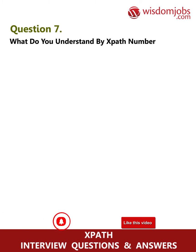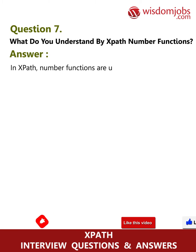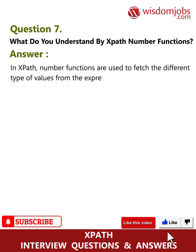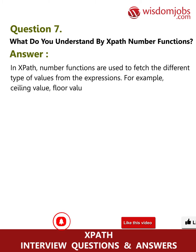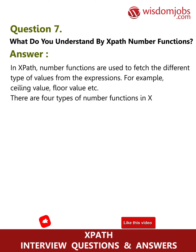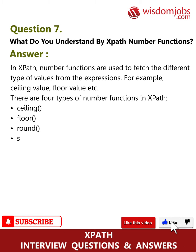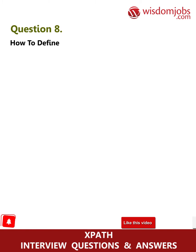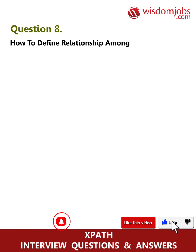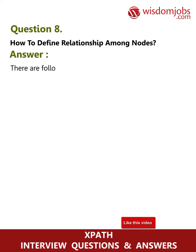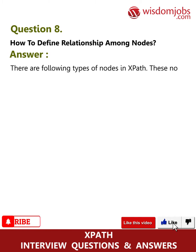Question 7: What do you understand by XPath number functions? Answer: In XPath, number functions are used to fetch different types of values from expressions — for example, ceiling value, floor value, etc. There are four types of number functions in XPath: ceiling, floor, round, and sum.